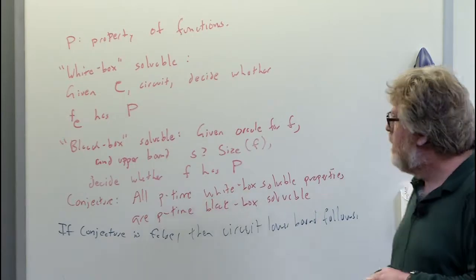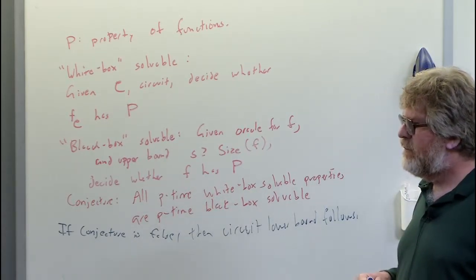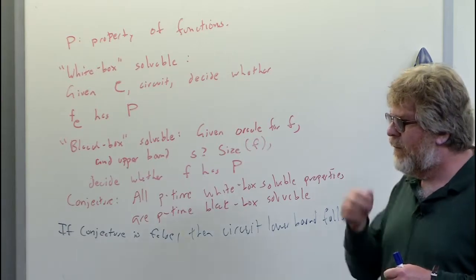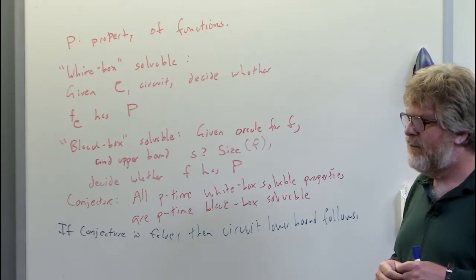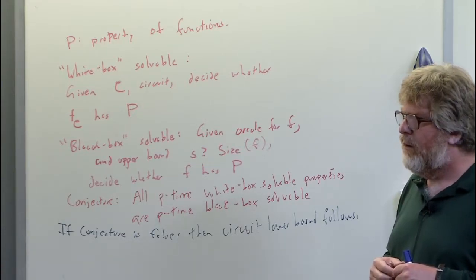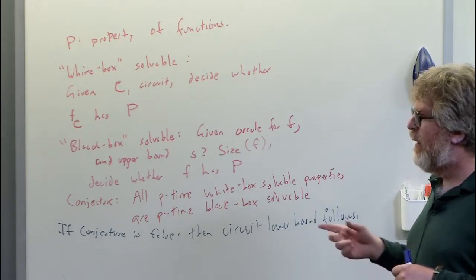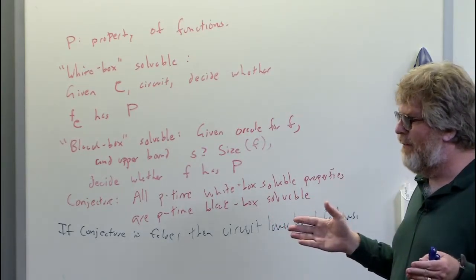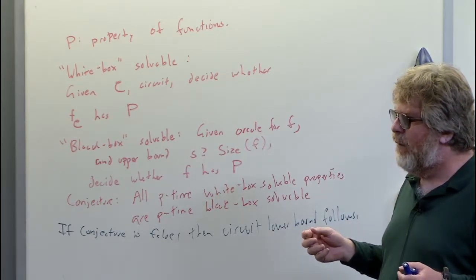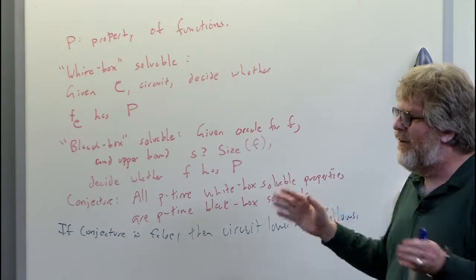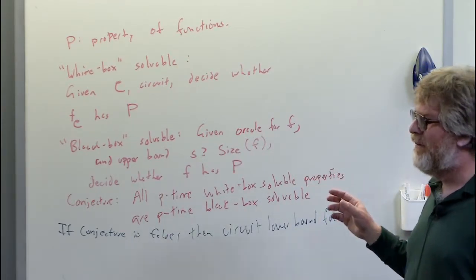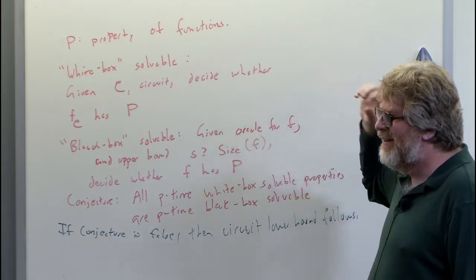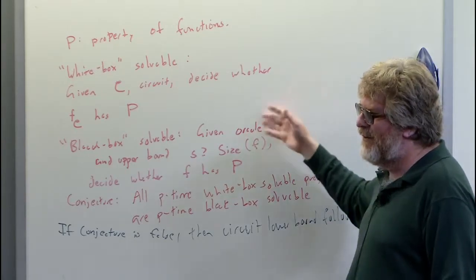Q: If it's black-box oracle access, what's to stop some nonsense where the circuit behaves almost according to the property but is off by one bit at a particular location? A: That would not be black-box solvable either. Take SAT algorithms — SAT is asking whether the function is identically zero or different from zero at some input. It's not clear that's ever white-box solvable. It's clear it's not black-box solvable if it could be at a random place.